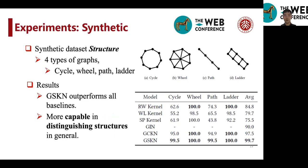And then we show our experiments. First, we show several experiments on synthetic datasets. First, we generate four types of structural graphs: cycles, wheels, paths, and ladders, which are shown on the right.